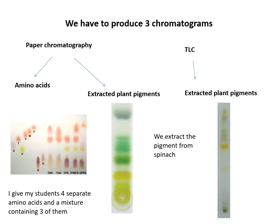You need to produce three chromatograms: two paper ones and one TLC one. For paper chromatography, you'll do amino acids and extracted plant pigments. The TLC one will also use extracted plant pigments — for that we extract the green pigment from spinach using a solvent. For the amino acid experiment, students are given four separate amino acids labeled A, B, C, D and a mixture containing three of them. The task is to identify which three amino acids are in the mixture.